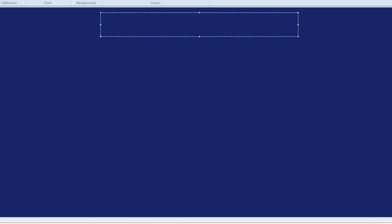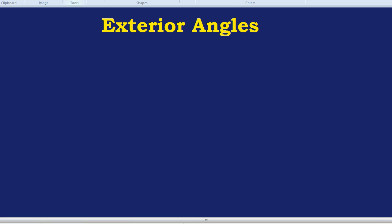In this video we're going to look at exterior angles. Exterior angles. What are exterior angles? What they are, are angles which are at the exterior of a shape. Exterior means like the outside of a shape.